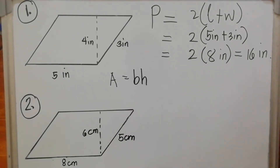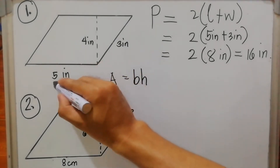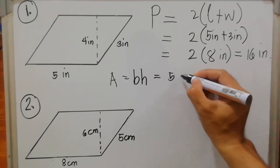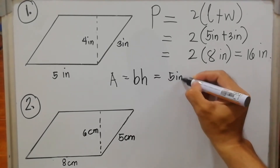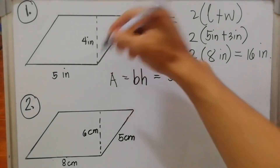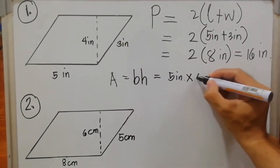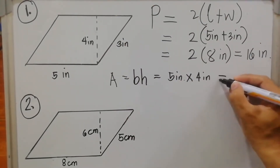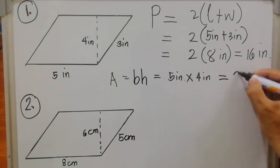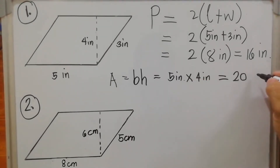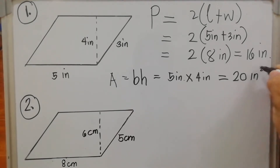For the area of the parallelogram: A = base × height. Base is five inches, height is four inches. So: 5 × 4 = 20 square inches.